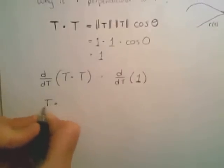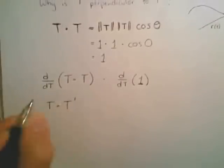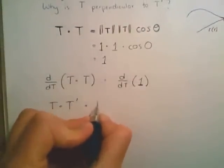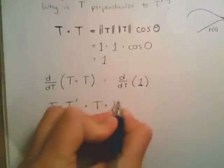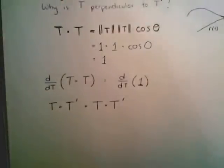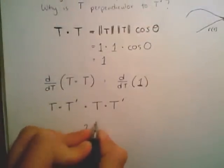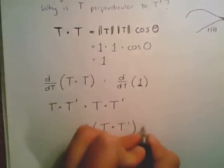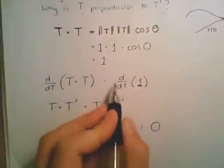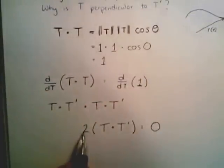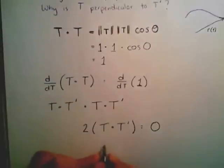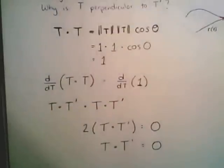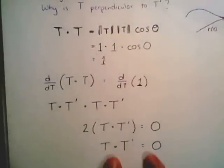It's going to be first times the derivative of the second, and in this case, it's dotted with the derivative of the second because our operation is dot product, not multiplication, plus second dotted with the derivative of the first. So we end up with the left-hand side being 2 times the dot product T dotted with T prime is going to be equal to the derivative of 1, which is 0. I'm going to divide both sides by 2, 0 divided by 2 is 0, and that means that T dotted with T prime is equal to 0.